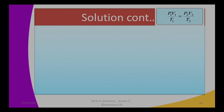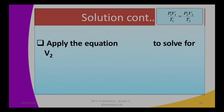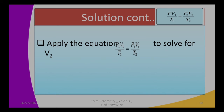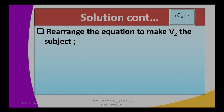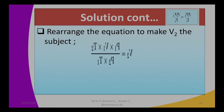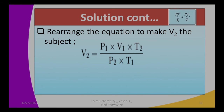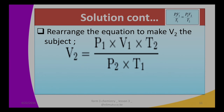The next step is to apply the equation to solve for V2, the final volume. We apply the Combined Gas equation: P1V1 over T1 equals P2V2 over T2. We arrange the equation to make V2 the subject. Volume 2 is given by pressure 1 multiplied by volume 1 multiplied by temperature 2, all divided by pressure 2 multiplied by temperature 1. We have now made V2 the subject of the formula.